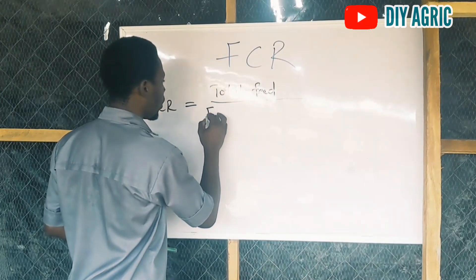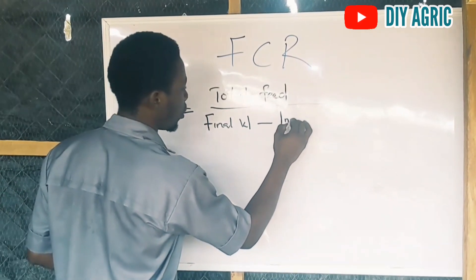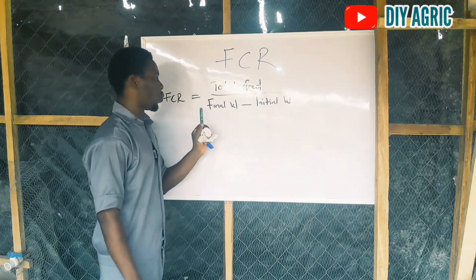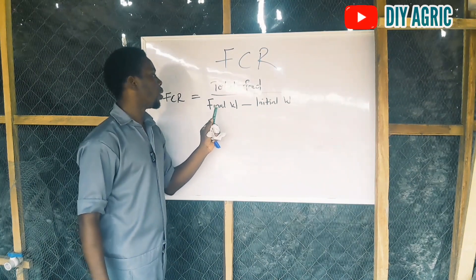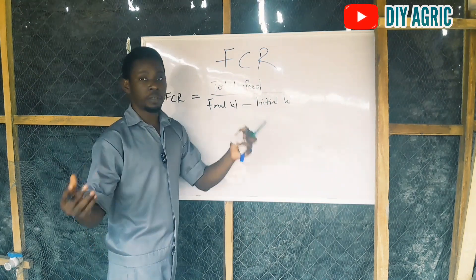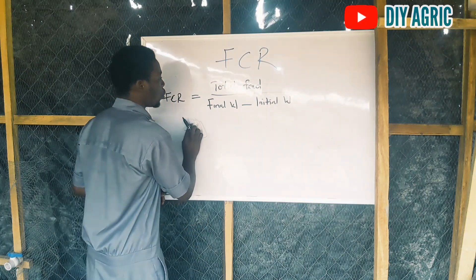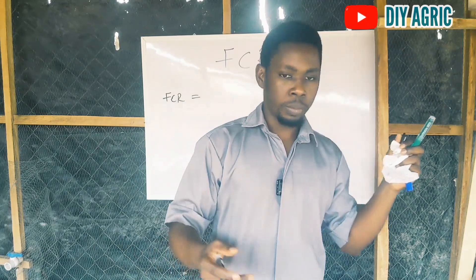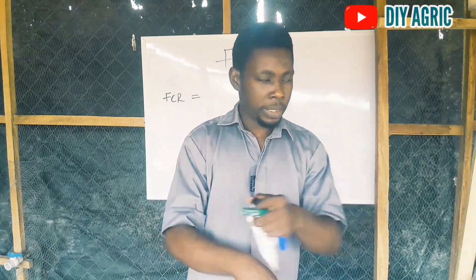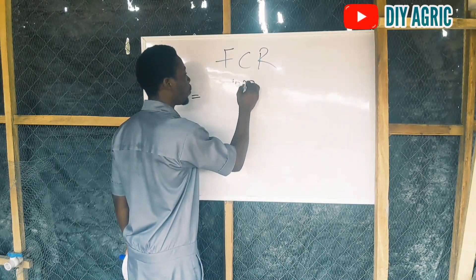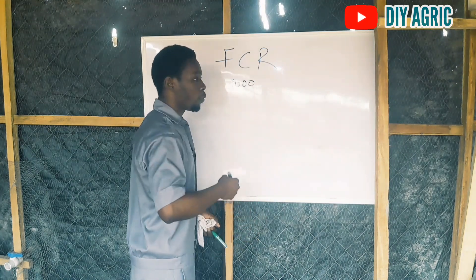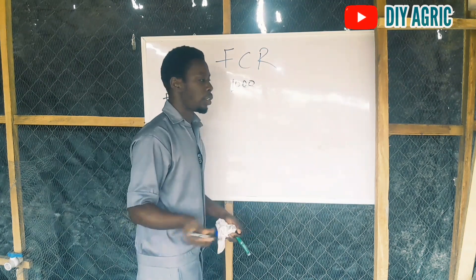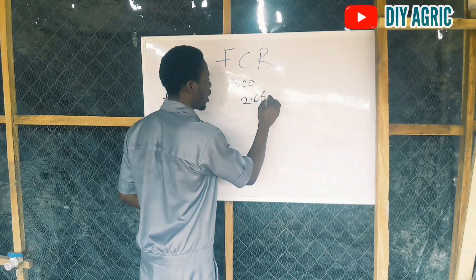So your FCR, as I said earlier, is total feed given to the birds divided by the final weight of the birds minus the initial weight. The initial weight is the weight when they came to your farm as chicks, and the final weight is when you are about to sell. I want to advise: bring the numbers down to per-bird figures. For example, if you have 1,000 birds with an average weight of 2.06 kg, use 2.06 kg as your per-bird weight.